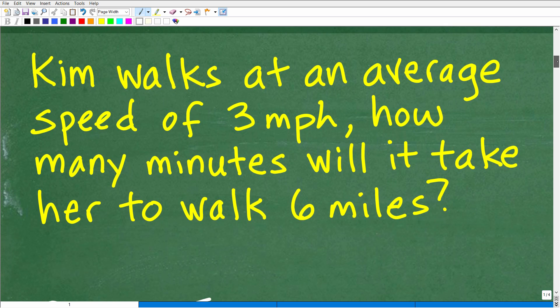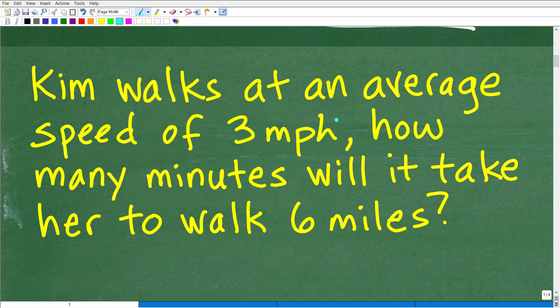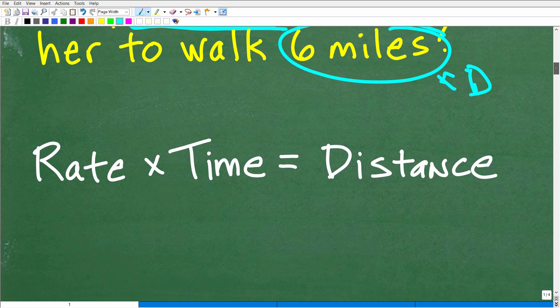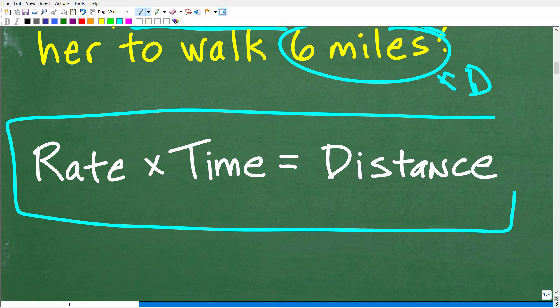Here's the problem again. This problem is dealing with speed or rate - we have 3 miles per hour. It's asking for how many minutes, and we have distance involved, 6 miles. So we have distance, speed, and we're looking for time. How can we relate speed or rate and time and distance? Well, there is an awesome formula that you're going to want to commit to your long-term memory. Here it is: rate times time equals distance, or RT = D.